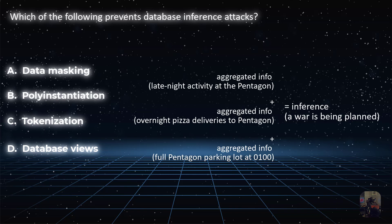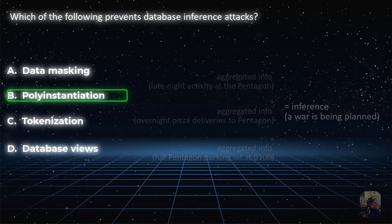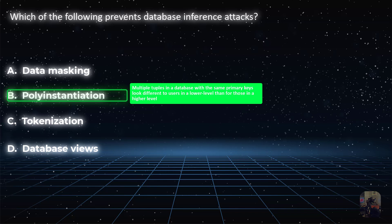How do we solve the problem of aggregating information to come up with a secret that you shouldn't be knowing? By using poly instantiation, which means to assign different values to the same objects within the same database. It's like creating two lower-level versions of the same object, which makes it more difficult to aggregate the final version.